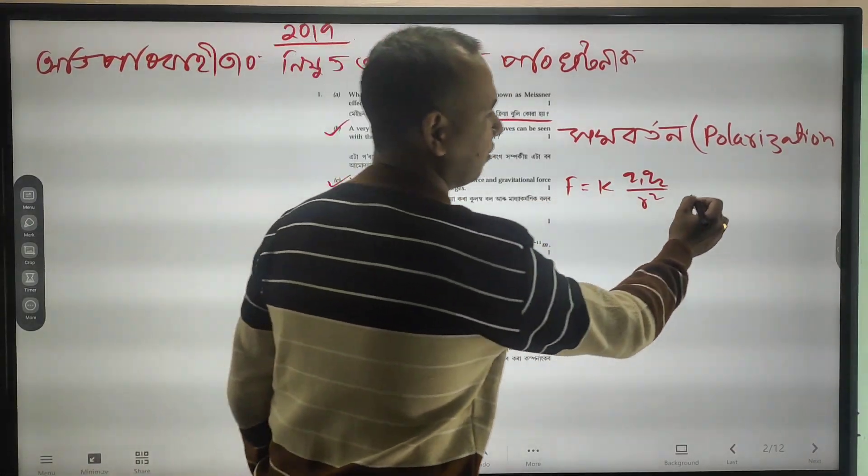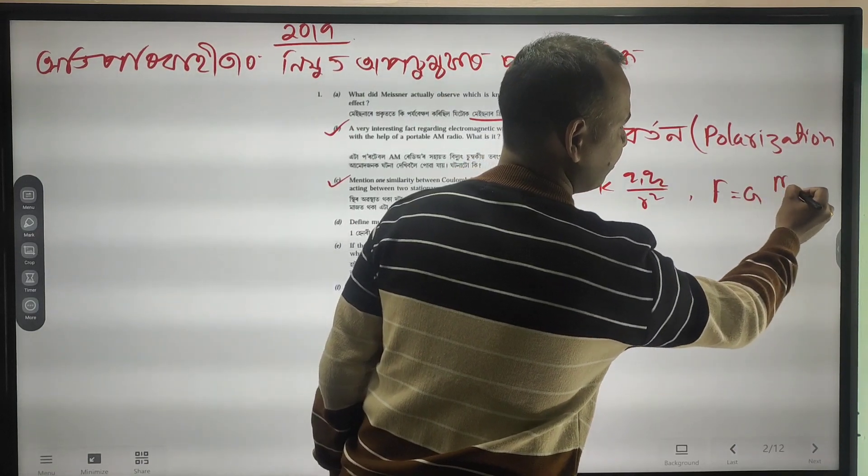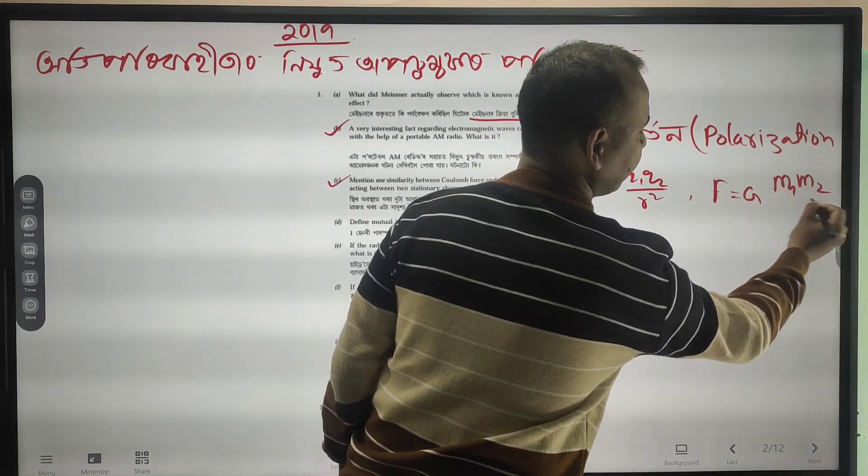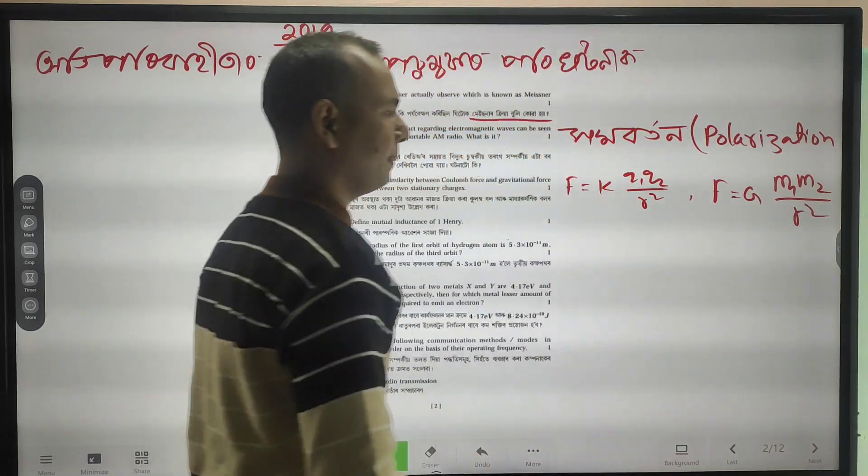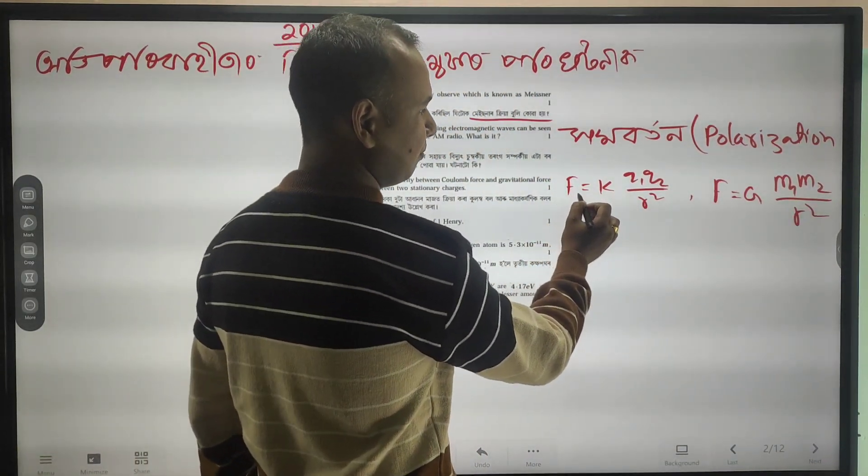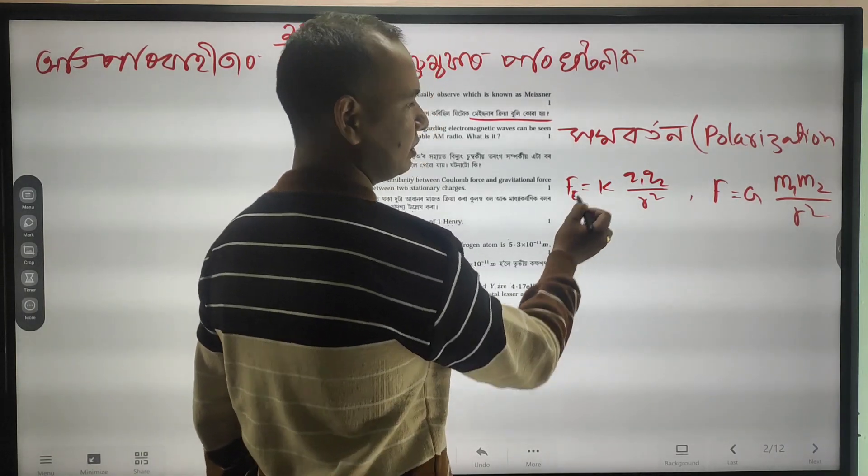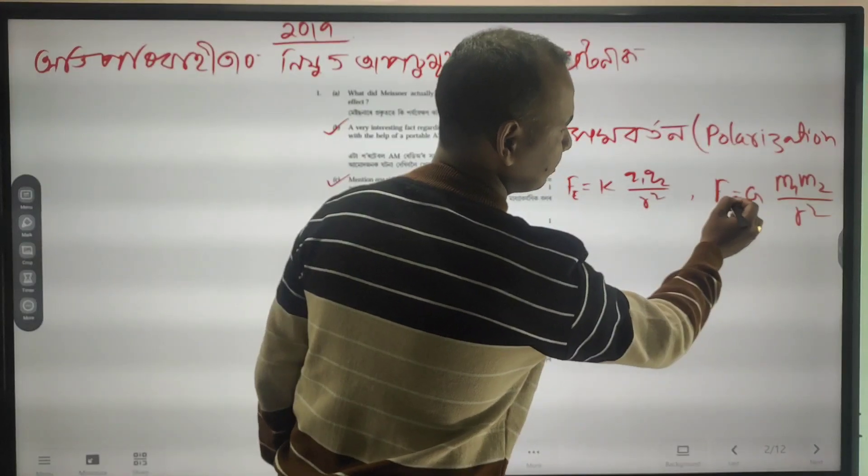Polarization by F equal to G m1 m2 divided by r square. If you want to write, F is called electrostatic force, electrostatic force and gravitational force.